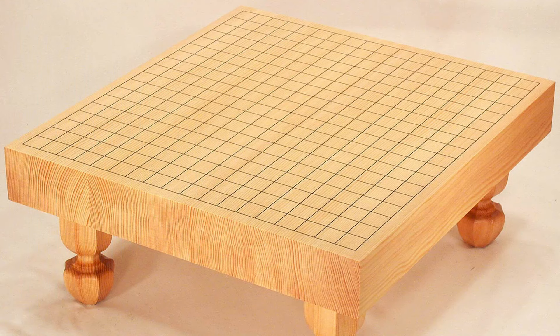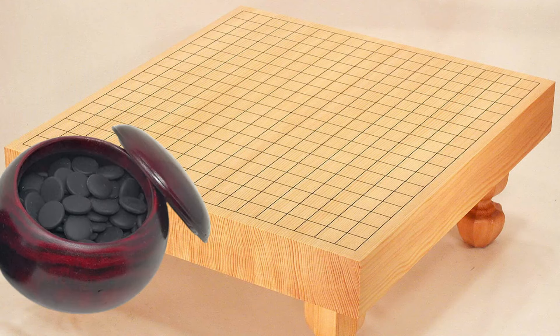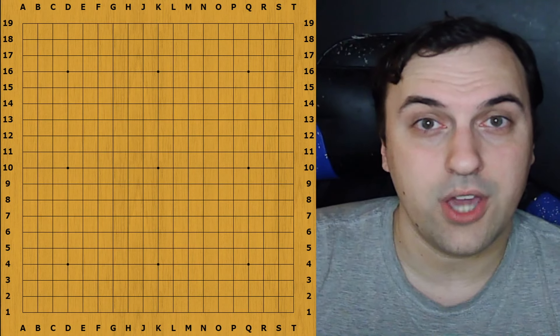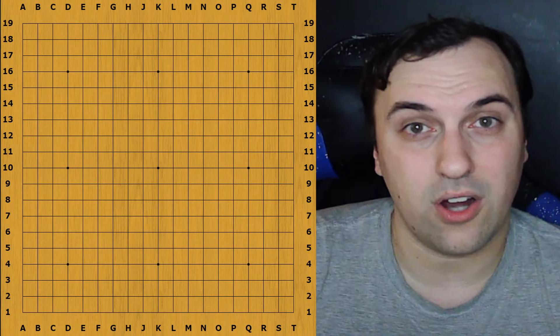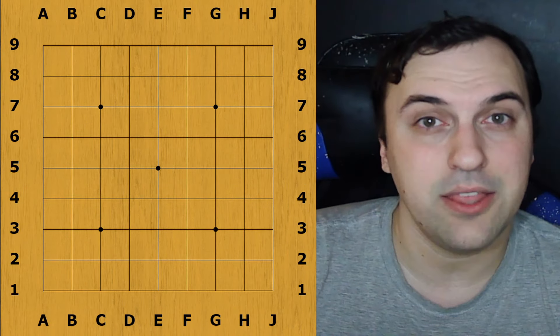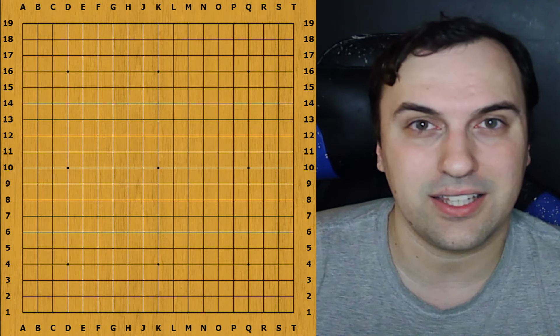Go is a two-player game with one player taking the black pieces, known as stones, and the other player taking the white pieces. Go is traditionally played on a 19x19 board, though beginners usually start on a smaller board, such as 9x9, and then move up to 13x13, and then finally to 19x19.